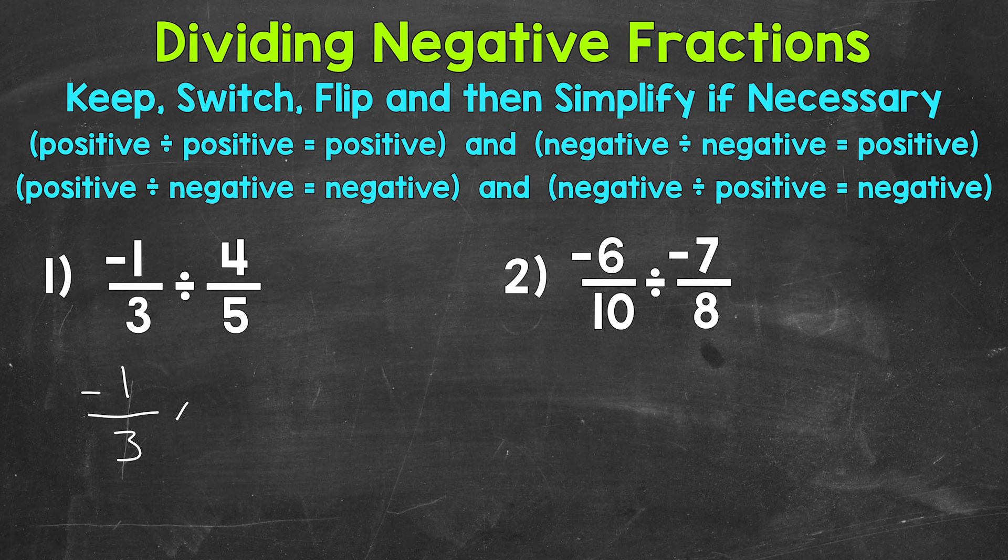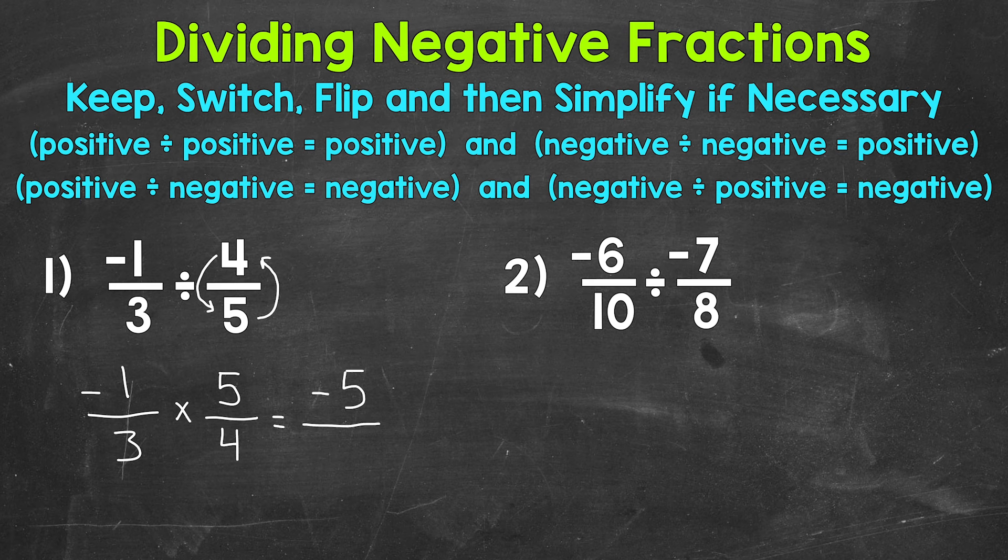Then we switch to multiplication and then flip our second fraction. This is called the reciprocal. So the five is going to become our numerator and the four is going to become our denominator. Now we're all set up and we can multiply straight across. So let's do our numerators, the top numbers. Negative one times five equals negative five. A negative times a positive equals a negative. And then for our denominators, we have three times four, which is 12.